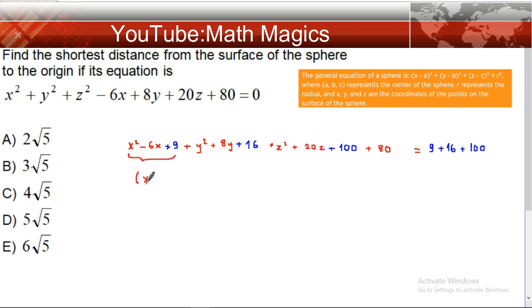We add 9, 16, and 100 to make them perfect squares. Now we have (x - 3)² plus